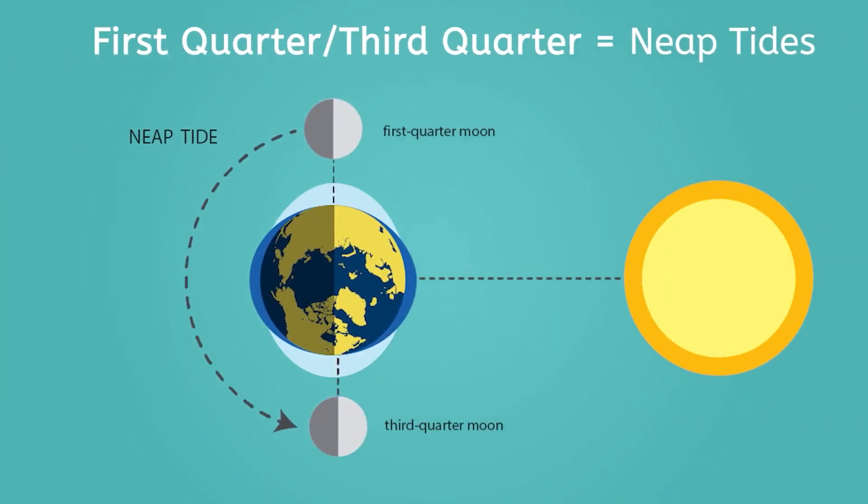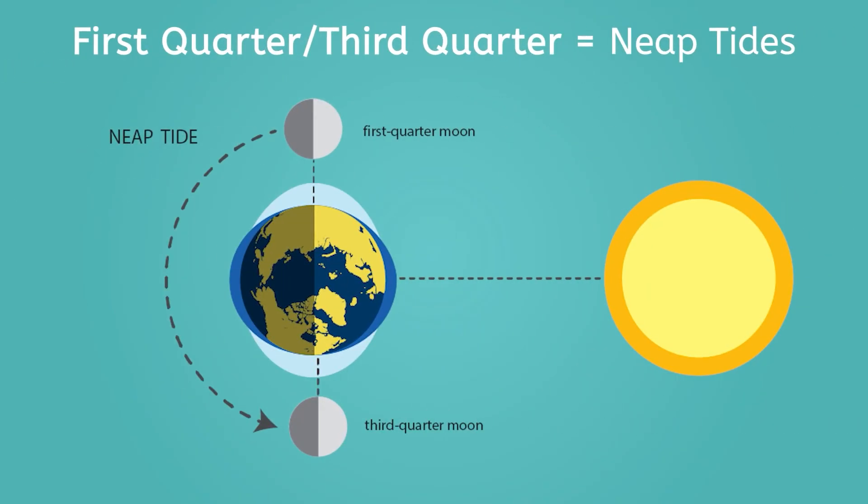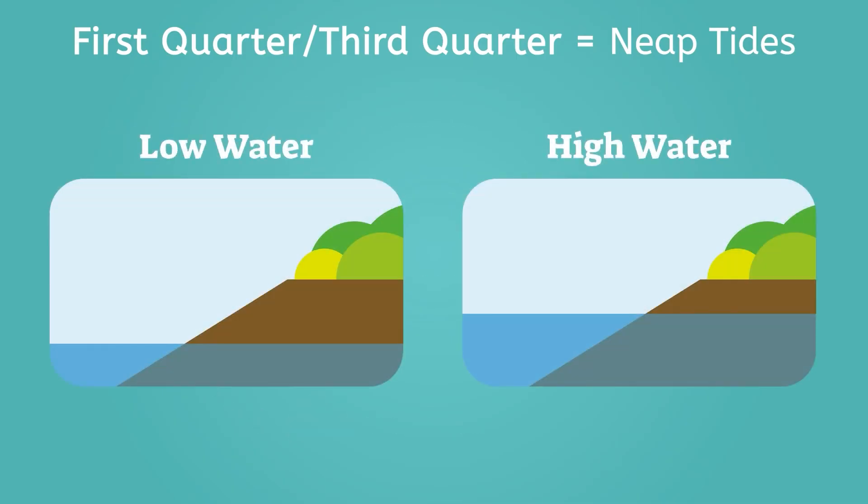During the first and third quarter phases, the sun and moon are at right angles relative to Earth, which leads to weaker tides called neap tides. So not only do the phases tell us about the moon's position in its orbit, they also affect the rise and fall of tides on Earth.